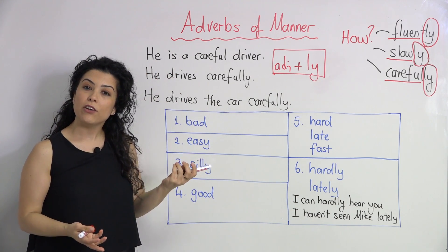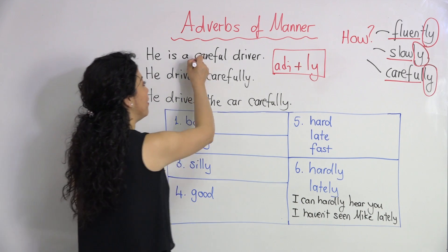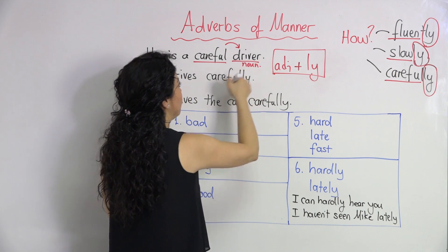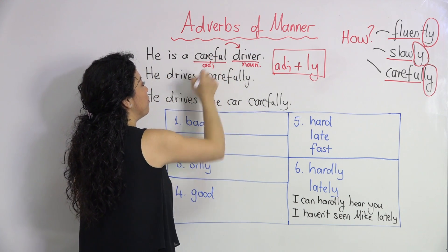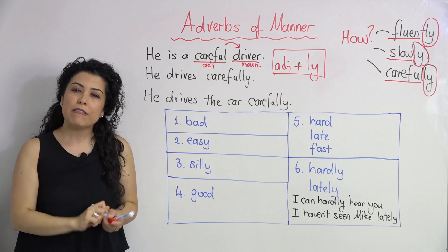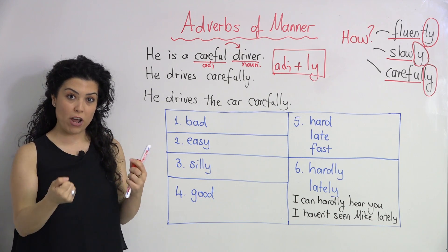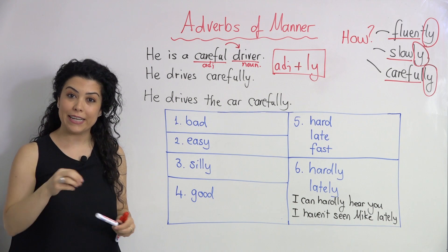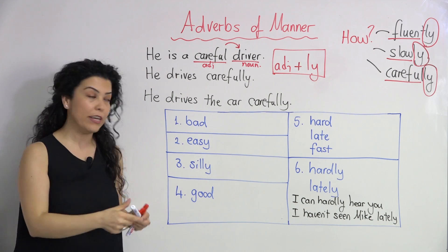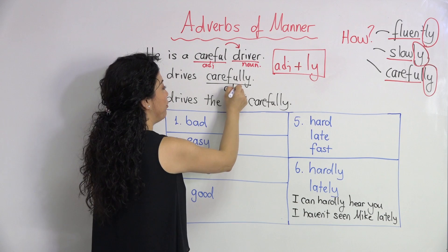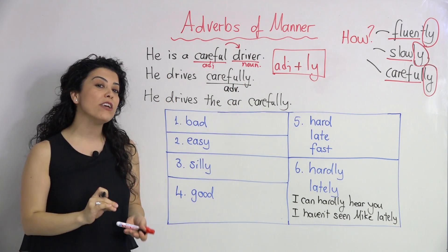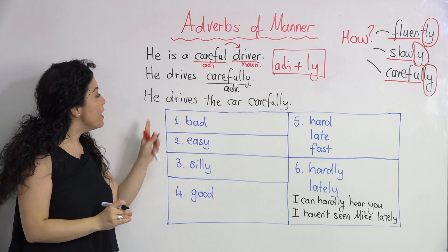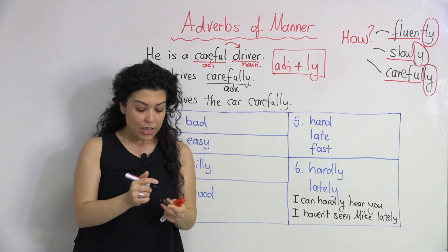For example: 'He is a careful driver.' Here, 'careful' is an adjective because it comes before the noun 'driver.' Now let's think about the action itself — driving. 'He drives carefully.' How does he drive? In a careful way — carefully. So 'carefully' here is an adverb. If there is an object in the sentence, the adverb can come right after it, as in: 'He drives the car carefully.'